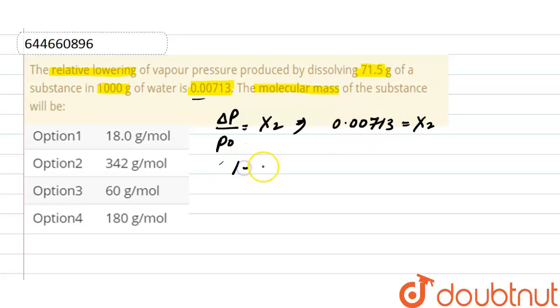So this will be 1 minus 0.00713 equals to 1 minus x2. So here we will get 0.99278. And as we know, sum of the mole fractions is equals to 1, and here mole fraction of solvent is equals to 1 minus x2.